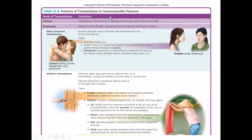We can have direct contact — kissing, or somebody sneezing on your face. A lot of STDs are transmitted that way. And we have indirect transfer. A fomite is a big generic term for any inanimate object that can harbor the pathogen and transmit it. A vehicle is a non-living material that doesn't necessarily harbor the pathogen, but will transmit it. A key distinction: a fomite remains stationary while the pathogen sits on it; a vehicle actively moves the pathogen around — through air, flowing water, soil, or food.